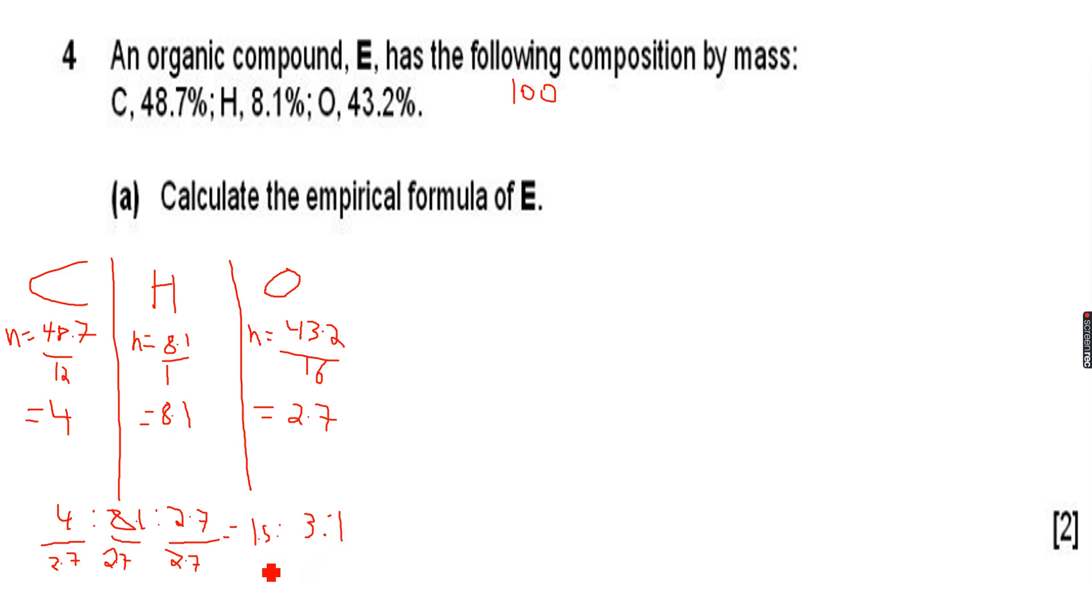Now this is not the simplest whole number ratio, so we will multiply it with 2, because we know that when we multiply this by 2 we will get 3 is to 6 is to 2.